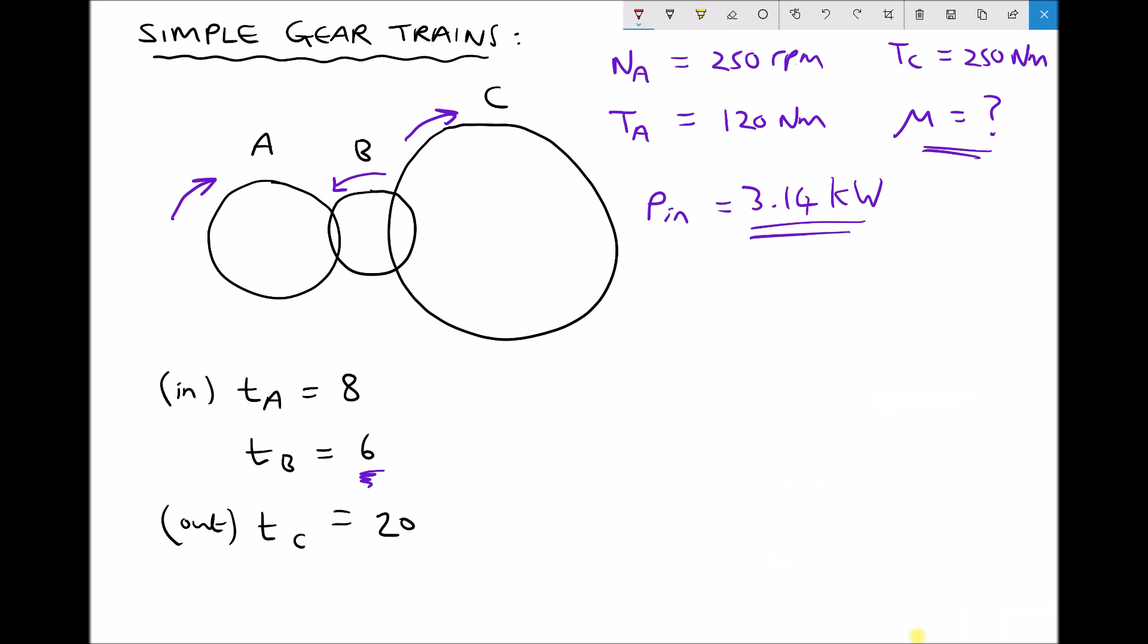So first of all we would need to calculate our ideal output torque. So T_C and I'll just call that subscript i for ideal. Well the ideal output torque if you recall is the gear ratio times the input torque.